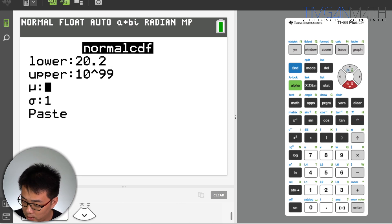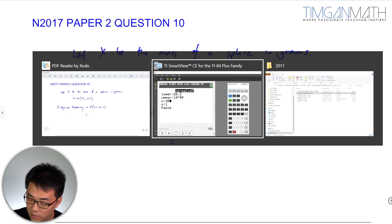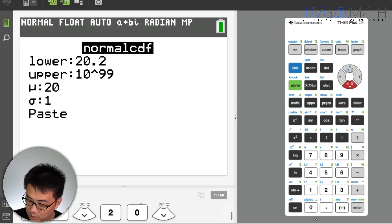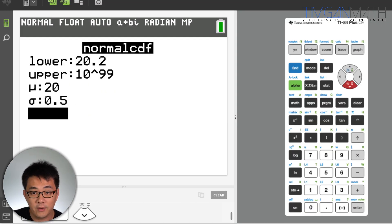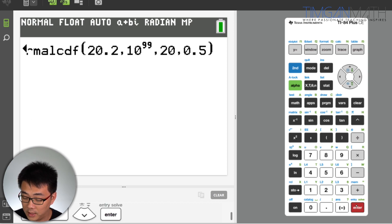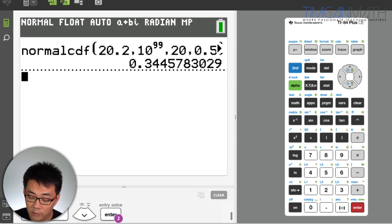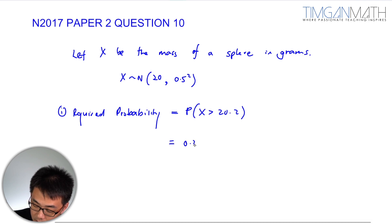And mu will be 20. And of course, this is sigma squared. So just take note that sigma is 0.5, the standard deviation is 0.5. And the key in calculator will be 0.34457. So this is 0.345 to three significant figures.